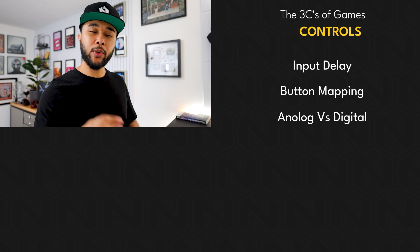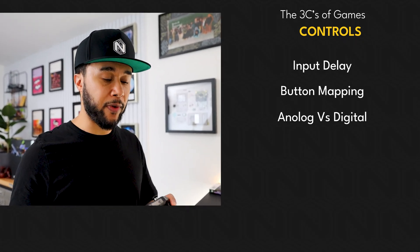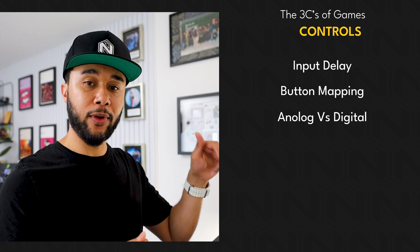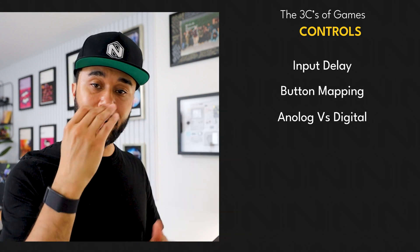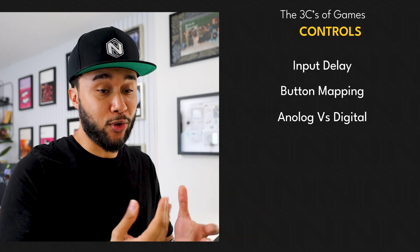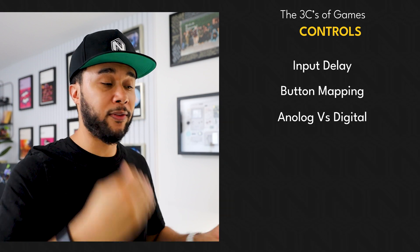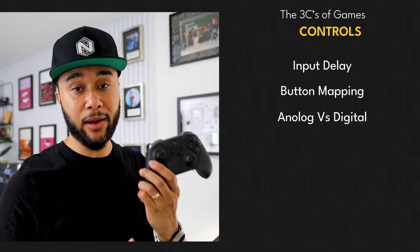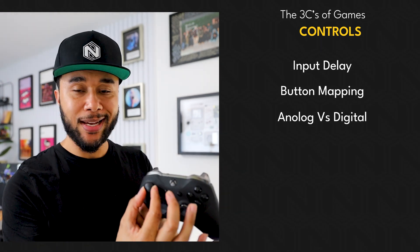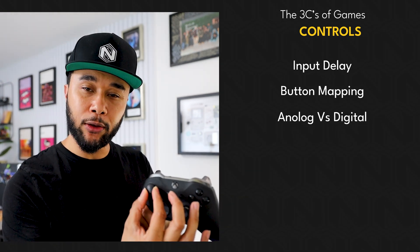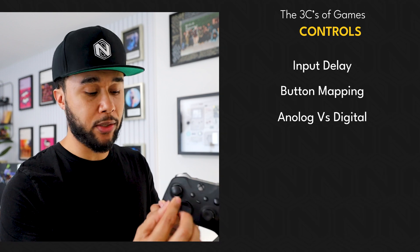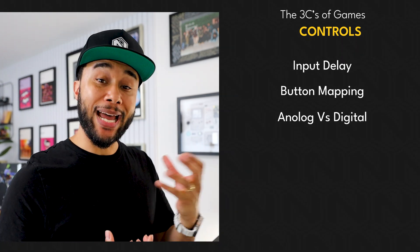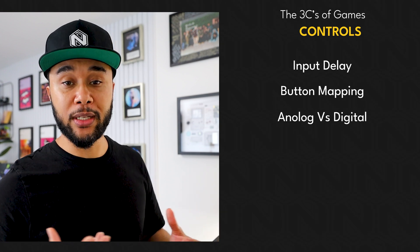Analog versus digital movement is a bit more complex. On a keyboard, pressing W gives you just an on/off keystroke — there's nothing in between. With analog controls on a controller, you can dial your movement in or out — your runs, sprints, whatever — so you have animations across the full range between on and off. That's what analog versus digital movement means.